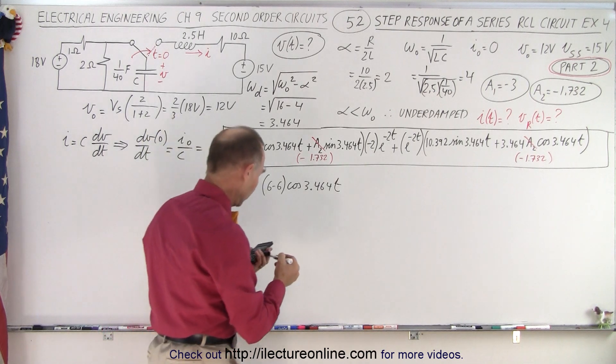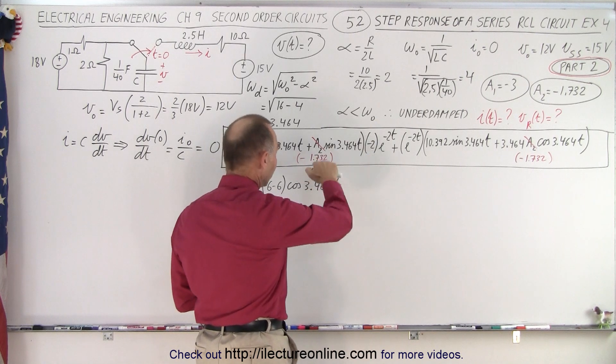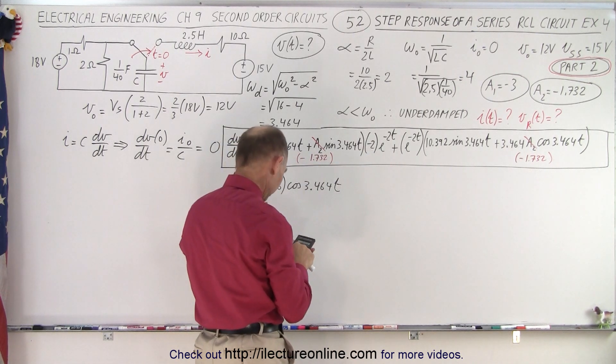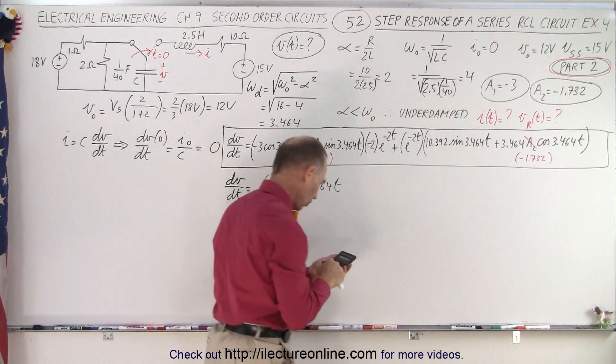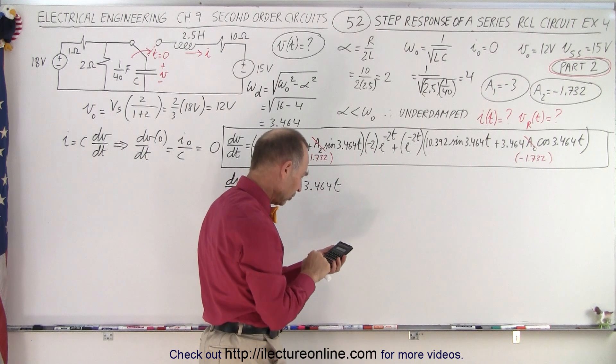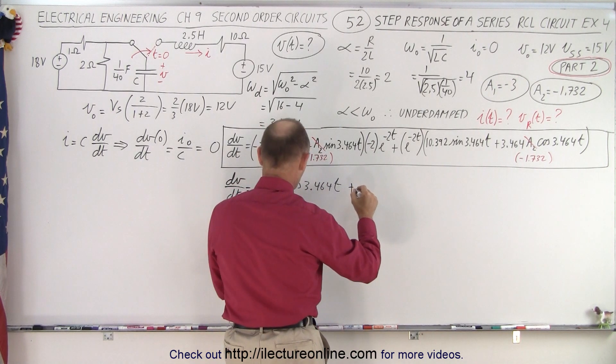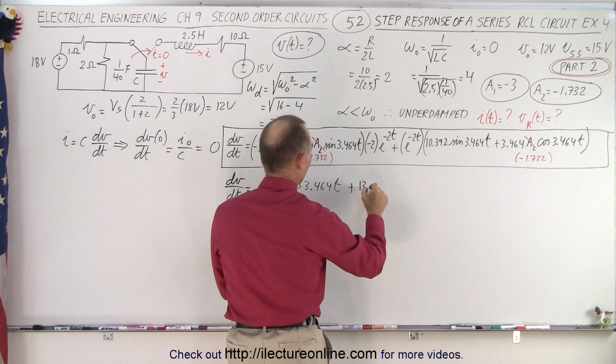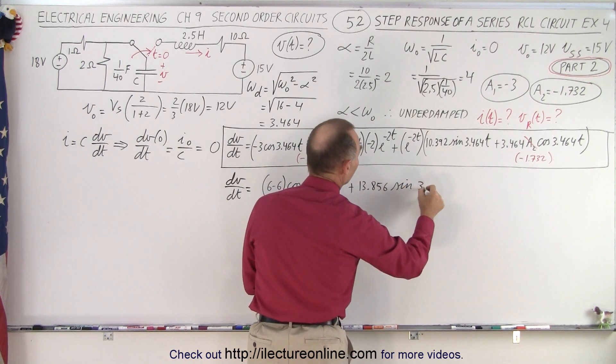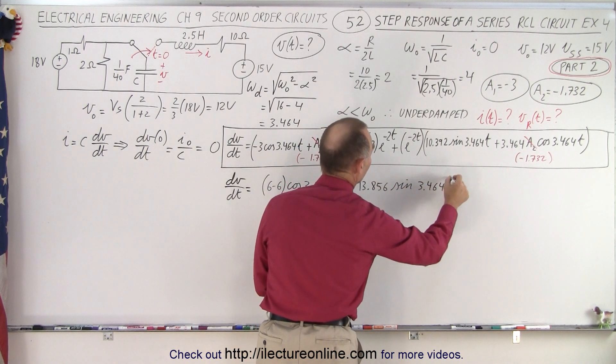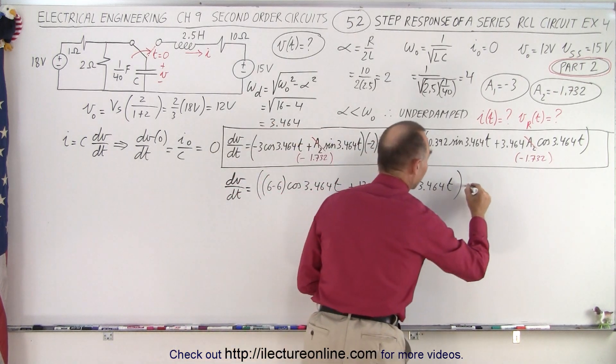Now the sine term. For the sine term, we have negative 1.732 times negative 2, so that becomes positive 3.464. Then we add that to this, so plus 10.392, we end up with plus 13.856 times the sine of 3.464t, and then the whole thing multiplied by e to the minus 2t.